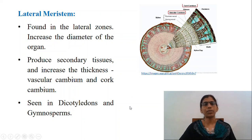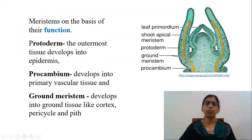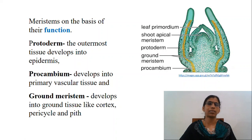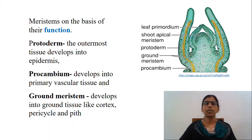Meristems based on function are of three types. The protoderm is the outermost tissue which develops into epidermis. The procambium develops into primary vascular tissue; it forms isolated strands of elongated cells very near to the central region. In cross section, each procambium appears as a small group of cells in the ground or fundamental meristem. But in longitudinal section, the cells appear long and pointed. The ground or fundamental meristem develops into ground tissue and pith. The cells of this region are large, thin-walled, living and isodiametric.